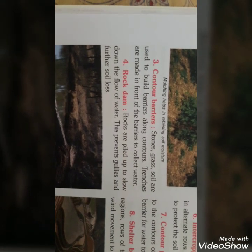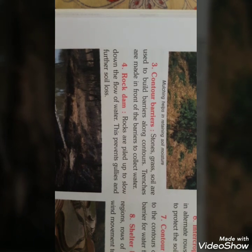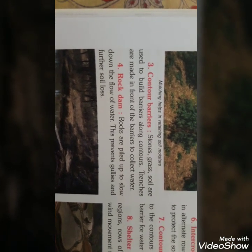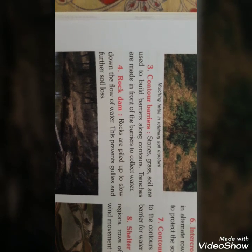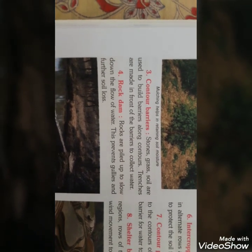Rock dam — rocks are piled up to slow down the flow of water. पत्थरों की एक दीवार सी खड़ी की जाती है जिसकी वजह से पानी का बहाव कम किया जाए। इसकी वजह से soil erosion, मतलब मिट्टी का पानी के साथ बहाव, कम होगा और soil erosion control हो जाएगा।